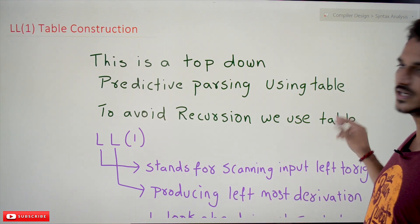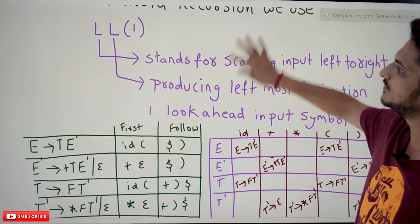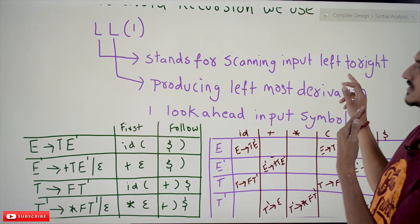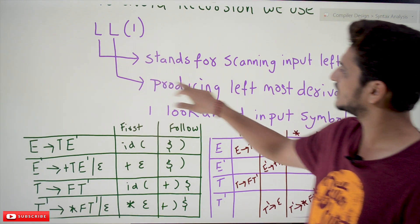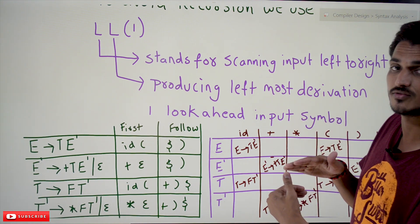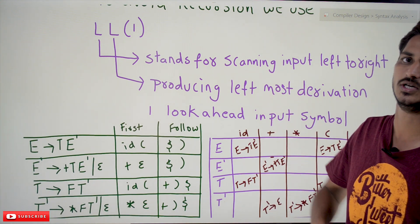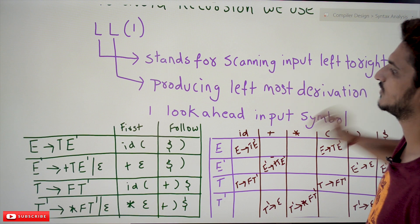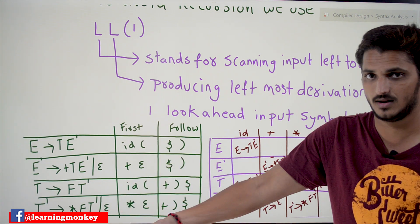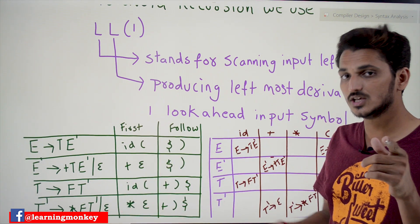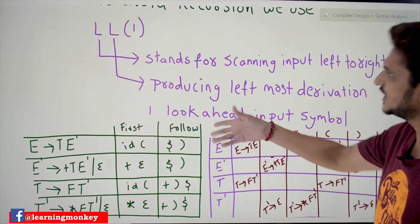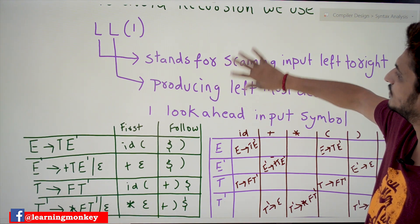Now let's understand what LL1 means. The first L stands for scanning input from left to right. The second L stands for producing the leftmost derivation for the given grammar — that is what happens in the top-down approach. The 1 stands for looking ahead one input symbol. Just as in recursive predictive parsing, LL1 also uses a one-symbol lookahead.